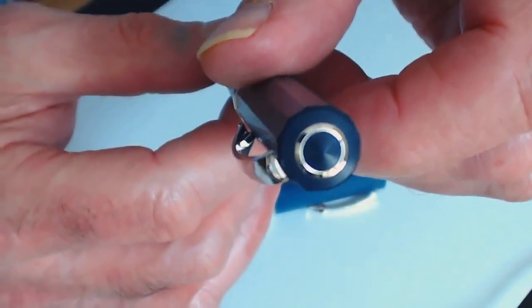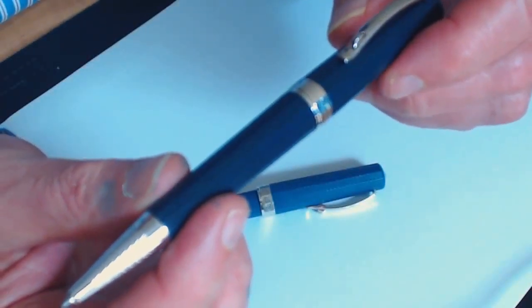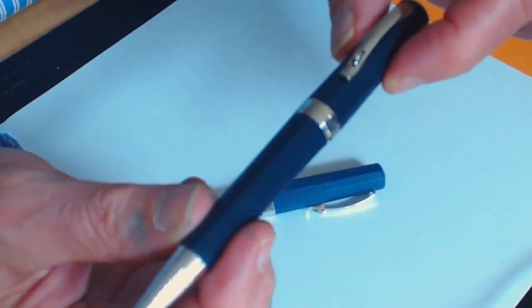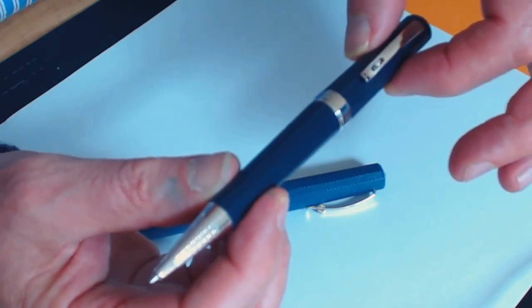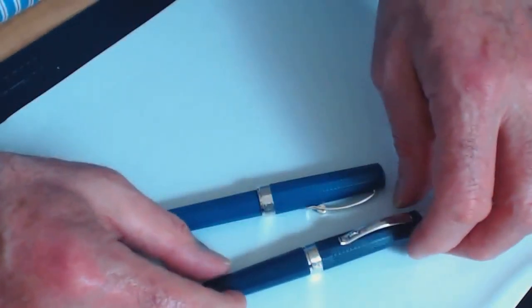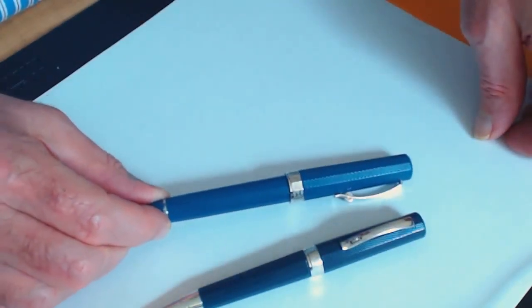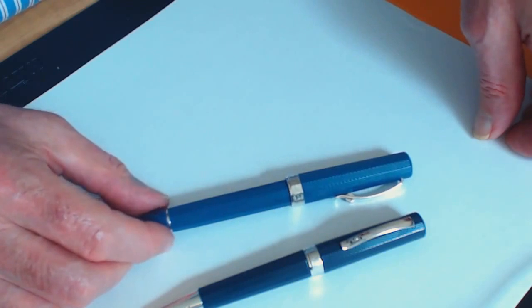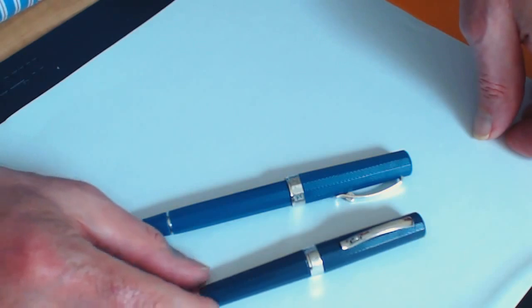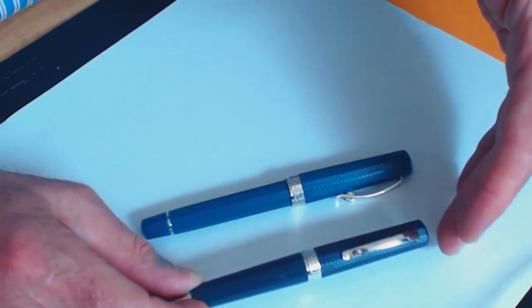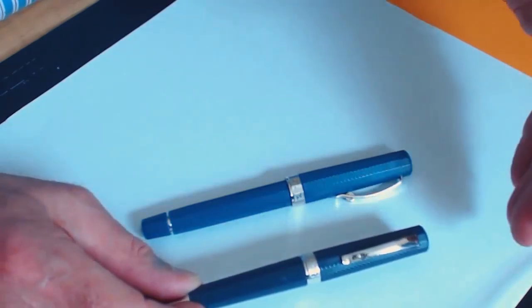We've got the classic Omas O on the top, and this of course is a ballpoint. The pen is available as fountain pen, ballpoint, or mechanical pencil. It's a limited edition—they're making 331 fountain pens in teal, 331 in navy, and they're making 331 either ballpoints or mechanical pencils, a total of 331 in the navy and in the teal.